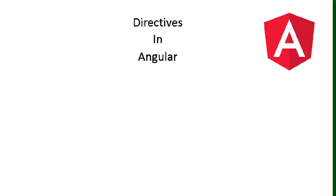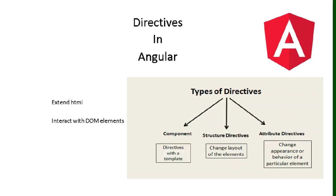In this video we will discuss what directives are and how to use them in Angular. Directives are used for extending HTML attributes — you can interact with DOM elements, change behavior, or show and hide particular elements. There are three types of directives: component, structural, and attribute directives. The component directive has already been discussed in the previous section.